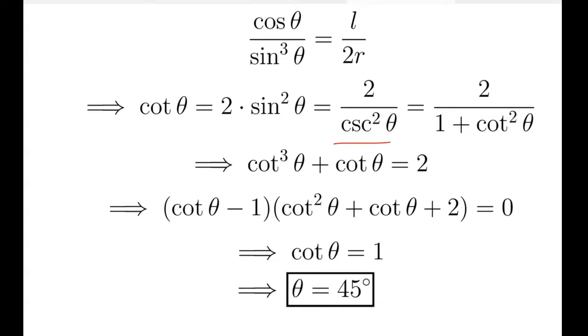Cosec square theta minus cot square theta is equal to 1, which is a very common identity. From here what we get is cosec square theta equal to 1 plus cot square theta. Forming the cubic in cot theta, we get cot cube theta plus cot theta equals to 2. If we get its factors, what we get is cot theta minus 1 into cot square theta plus cot theta plus 2 equals to 0.